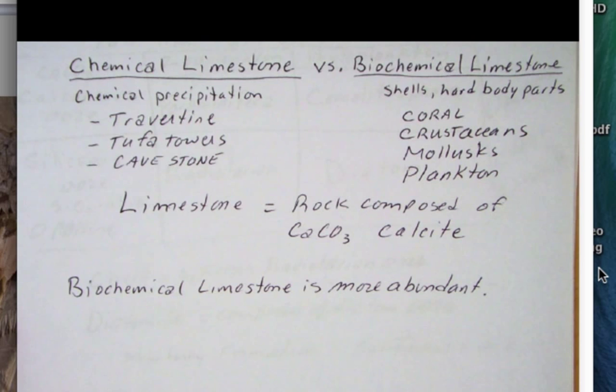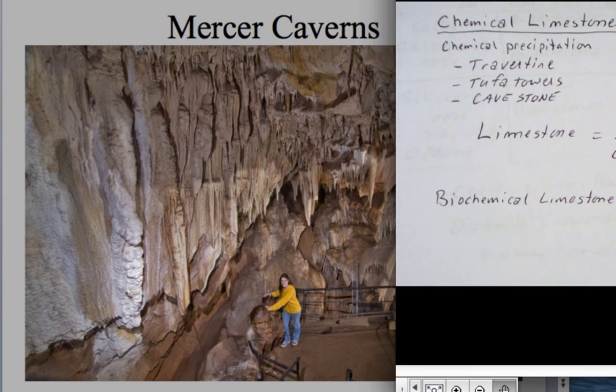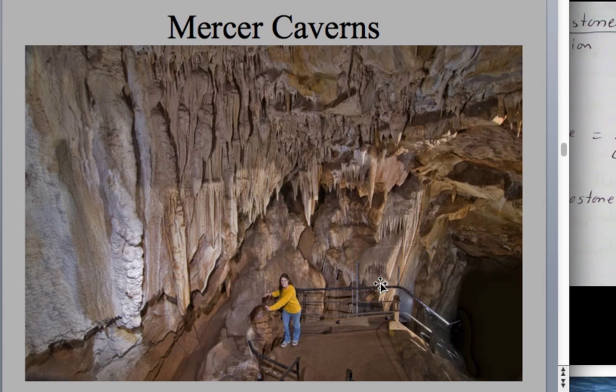Here in the PowerPoint we see Mercer Caverns, over near Angel's Camp, and Mercer Caverns has many of these cave stones. Either they're called stalactites because they're hanging from the ceiling, or stalagmites, which grow from the floor up toward the surface. But there's also flowstone, which is a type of cave stone. I don't have any travertine, but that would form at hot springs.